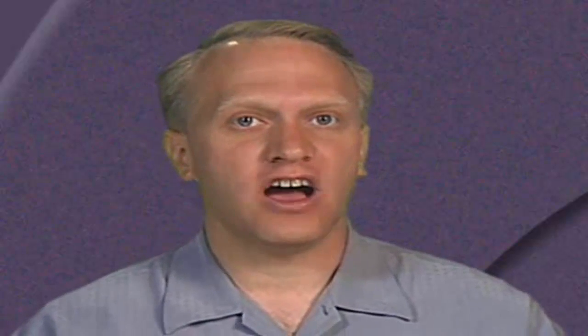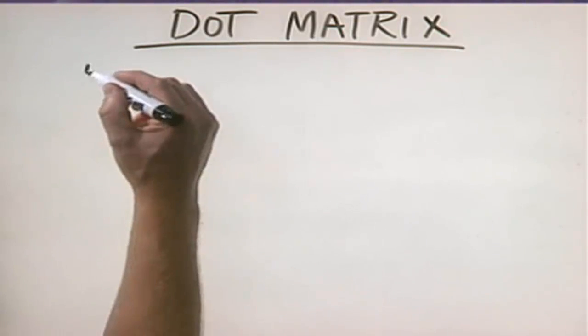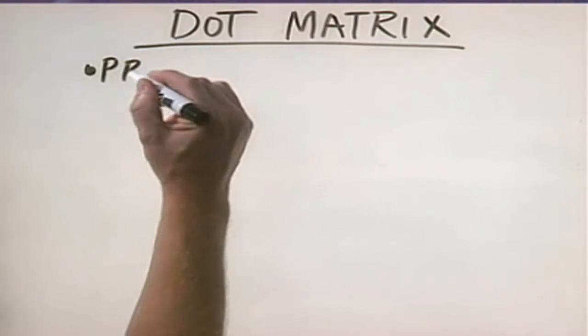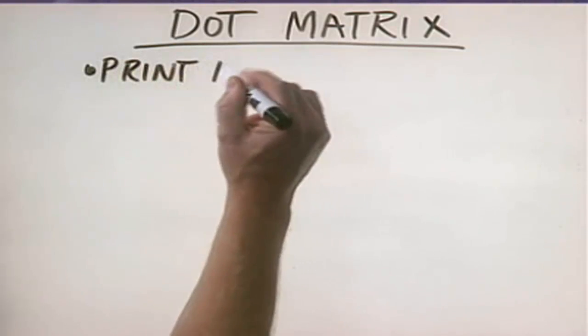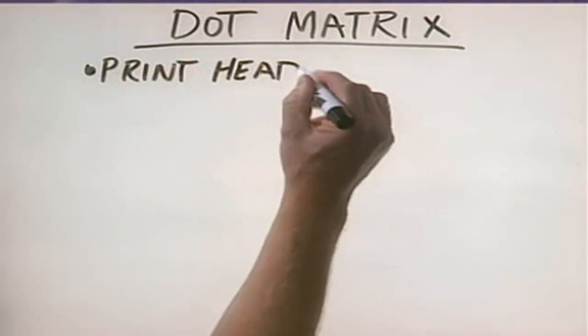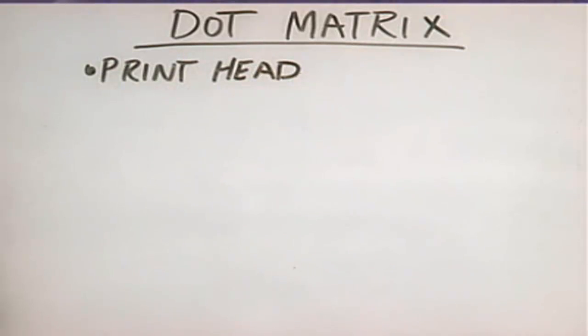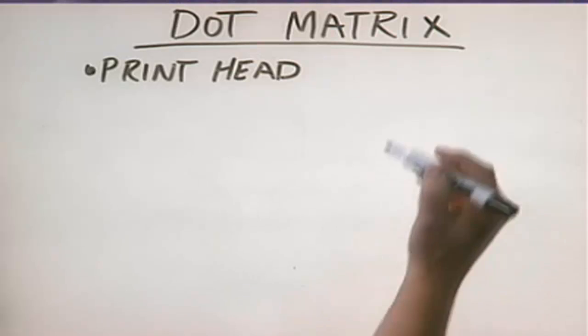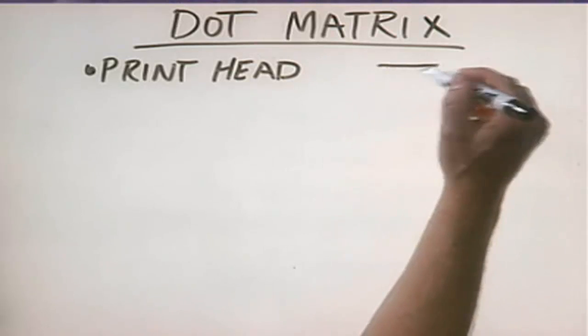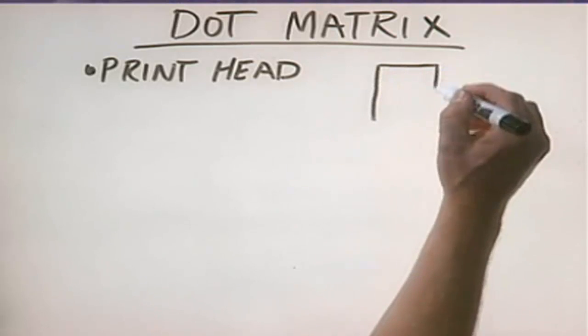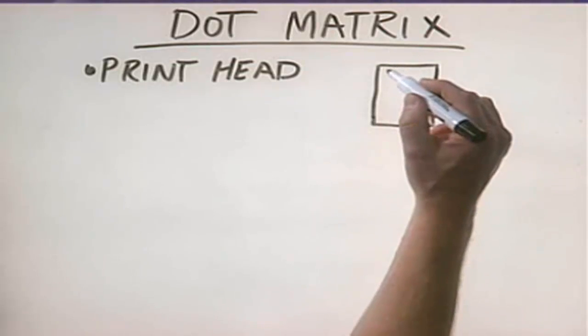Let's talk about the various different types of printers you can choose from. The first and oldest type is called a dot matrix printer. There are four critical components in a dot matrix printer. The first is the print head. The print head is relatively small, but if we were to look at it close up, we would see it looks like a square block with a series of pins.